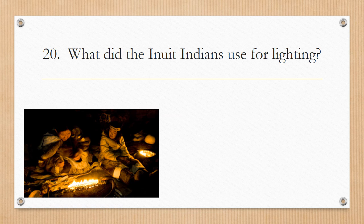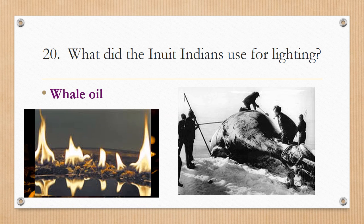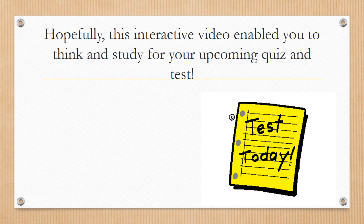Number twenty: What did the Inuit Indians use for lighting? Whale oil. Here are some Inuit Indians actually harvesting the oil from a large whale that they have speared. This oil would produce a type of fuel in order to light the igloo houses. Hopefully this interactive video enabled you to think and study for your upcoming quiz and test. Goodbye.